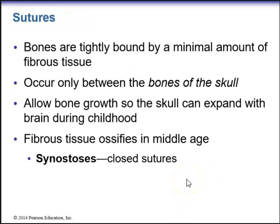Sutures are bones tightly bound by a minimal amount of fibrous tissue, occurring only between the bones of the skull. Sutures allow bone growth so the skull can expand with the brain during childhood, and this fibrous tissue will ossify in middle age. The closure of sutures is called synostosis.